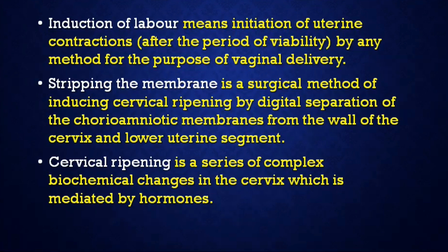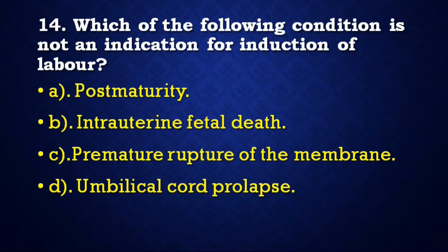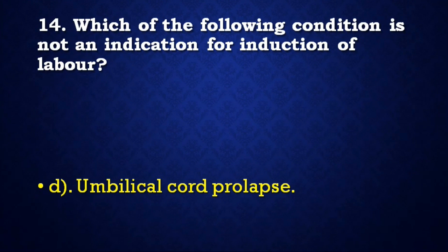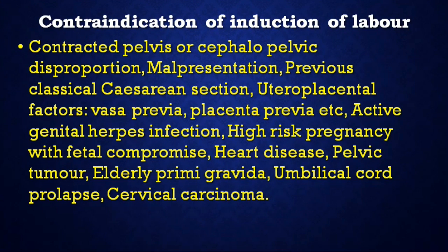Next question: Which of the following condition is NOT an indication for induction of labour — post-maturity, intrauterine fetal death, premature rupture of membrane, or umbilical cord prolapse? Correct answer is umbilical cord prolapse. Contraindications for induction of labour include contracted pelvis or cephalopelvic disproportion, malpresentation, previous classical cesarean section, uteroplacental factors like vasa previa and placenta previa, active genital herpes infection, high-risk pregnancy with fetal compromise, heart disease, pelvic tumor, elderly primigravida, umbilical cord prolapse, and cervical carcinoma.